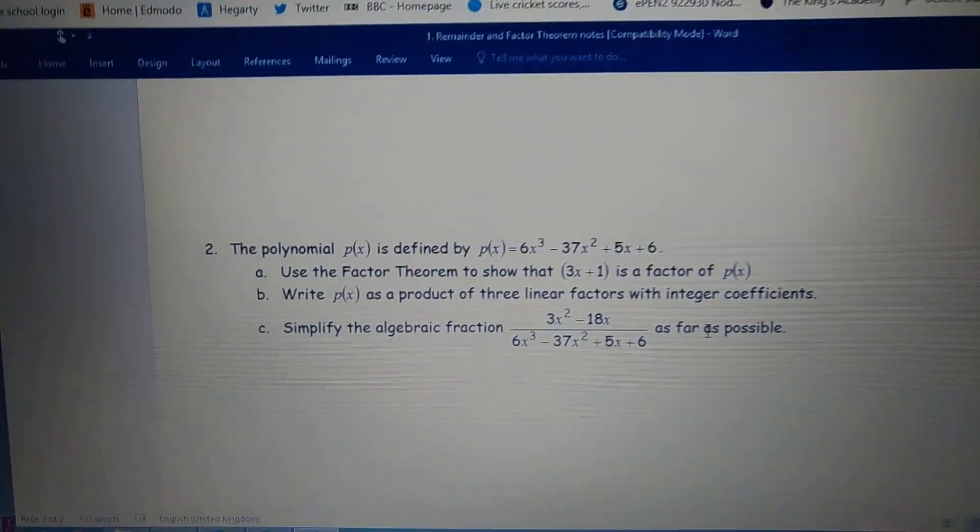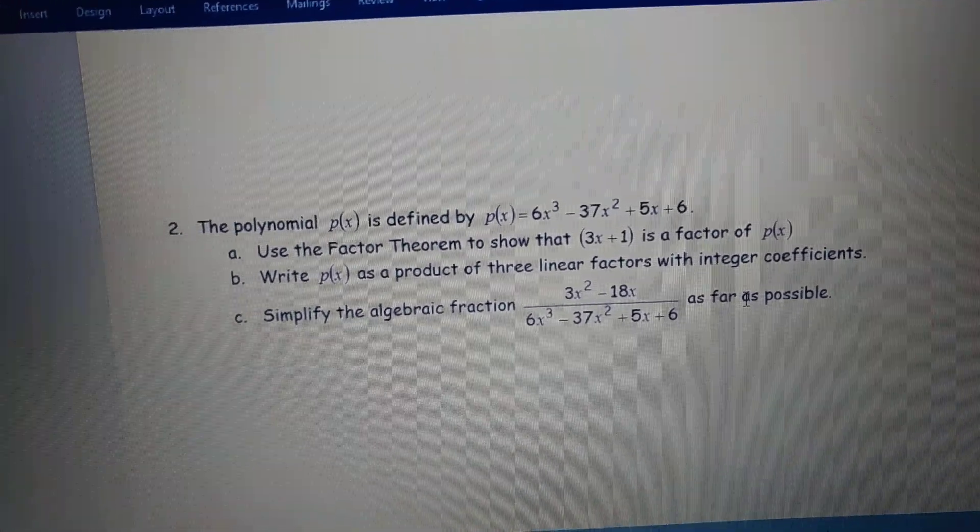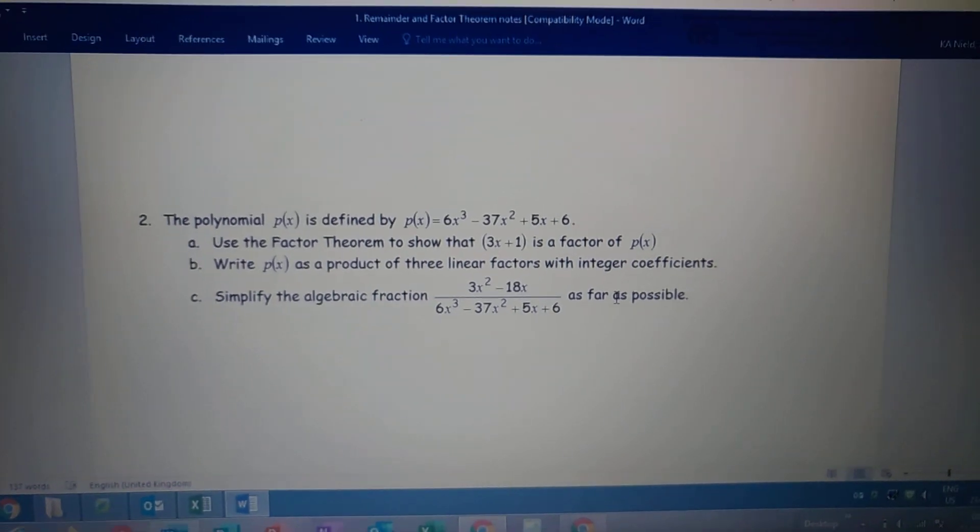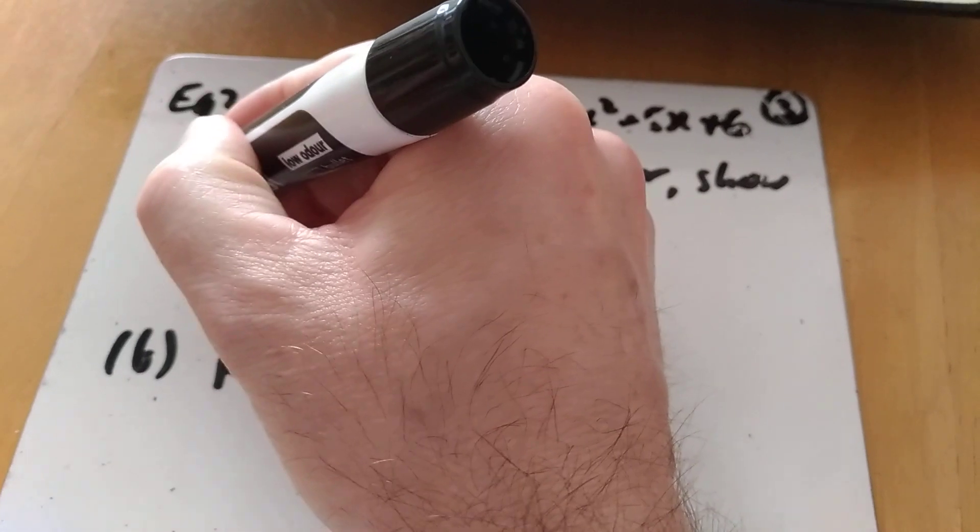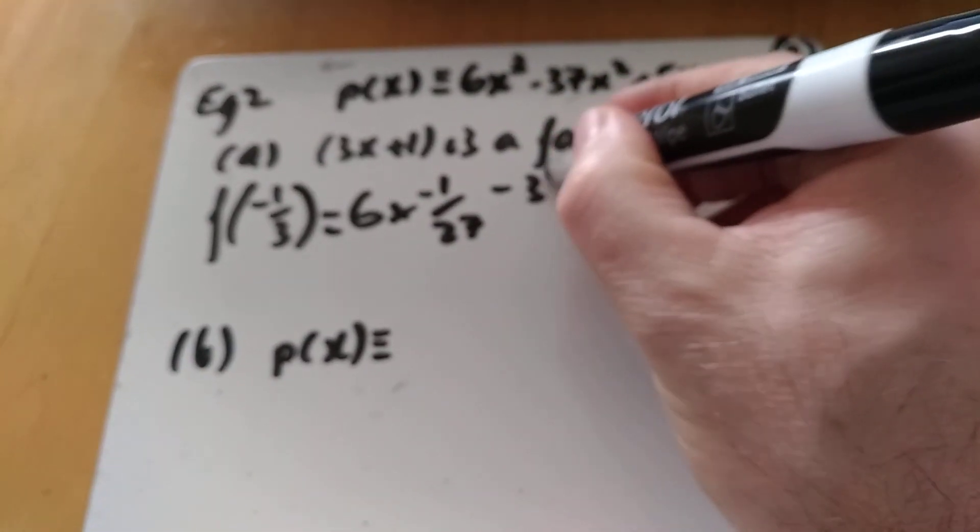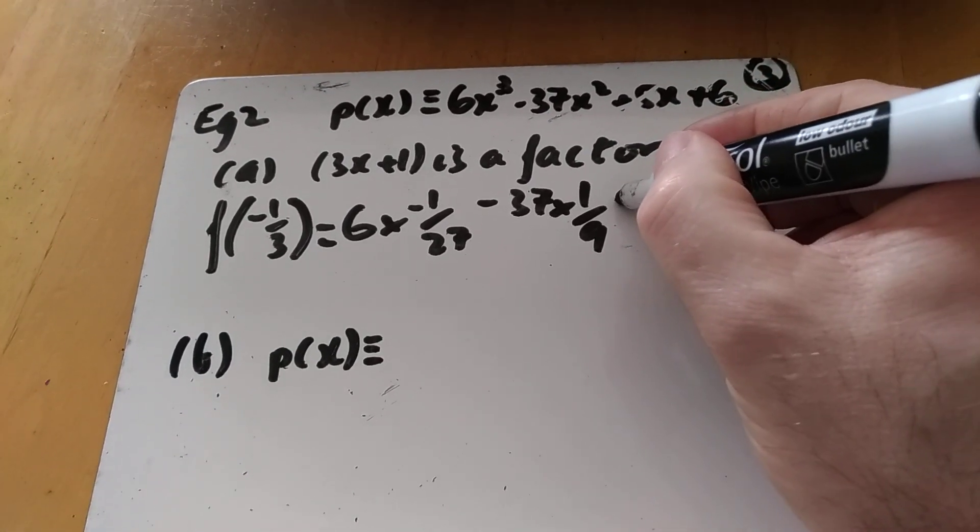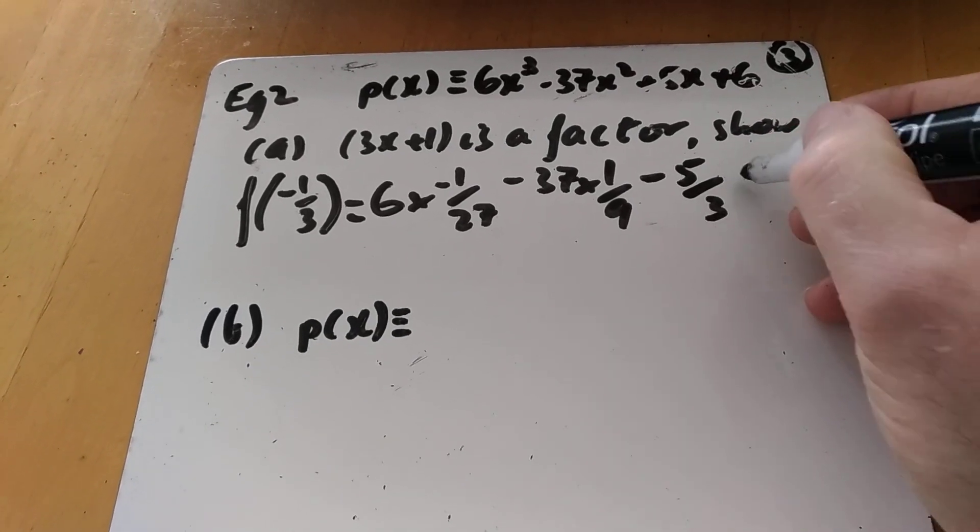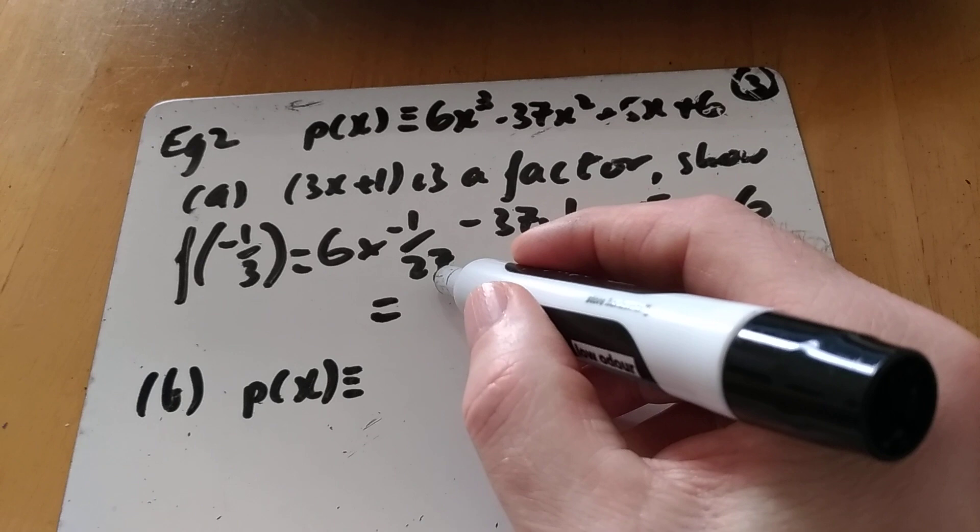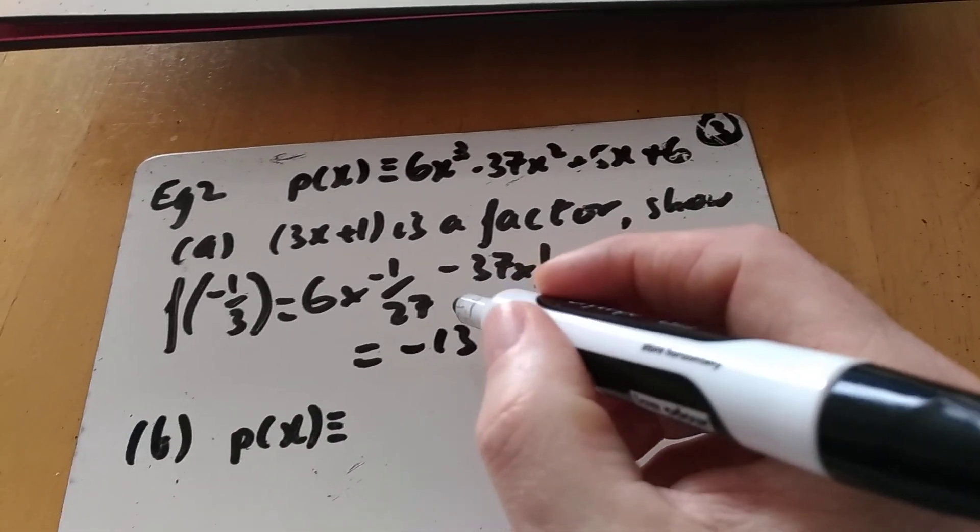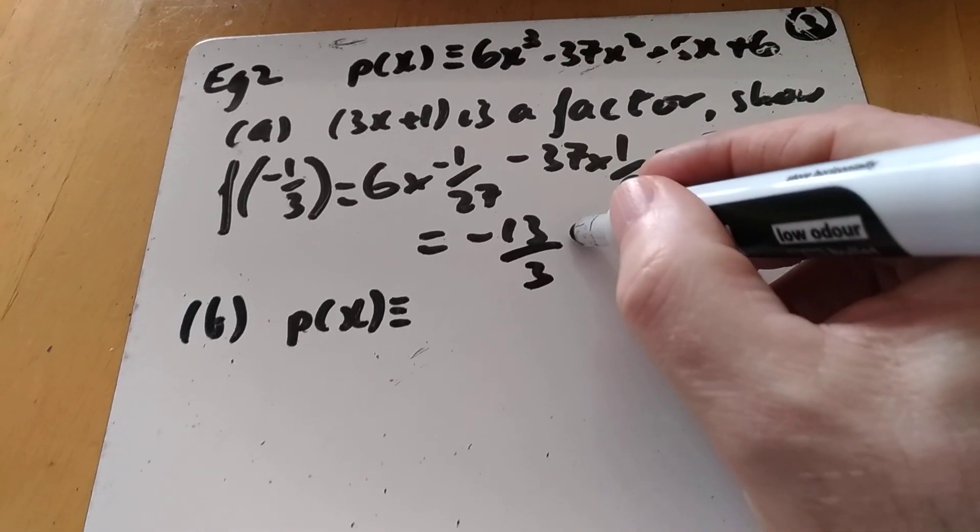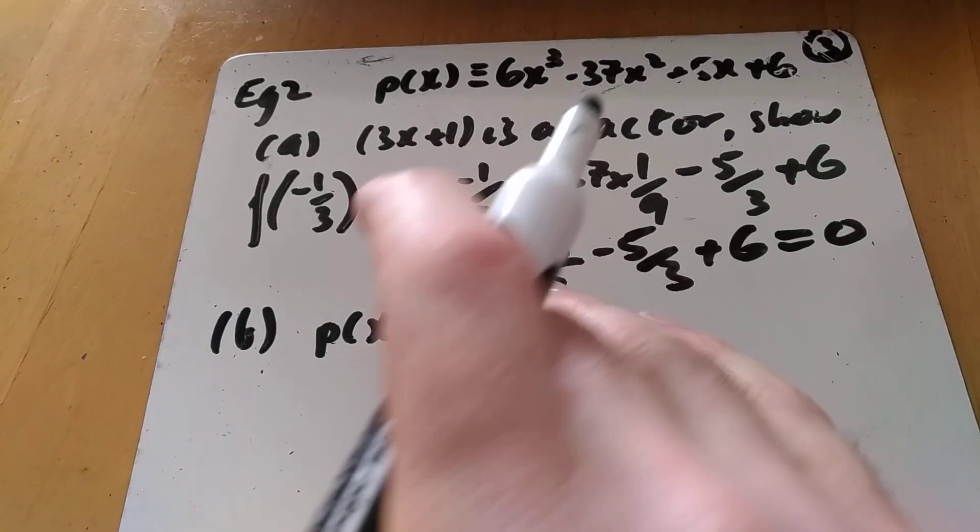Last example. Polynomial p(x) is defined by p(x) is equivalent to that cubic there. Use factor theorem to show that 3x plus 1 is a factor. And then factorise it, and then simplify that fraction there. So 3x plus 1 is a factor. We need to show it. So I need to look at f of minus a third and stick it into the cubic. 6 times minus 1 over 27, minus 37 times 1 over 9, minus 5 over 3, and plus 6. And hopefully when I press all those buttons there, I get minus 2 over 9, minus 37 over 9, is minus 13 over 3, minus 5 over 3, plus 6, which equals 0.